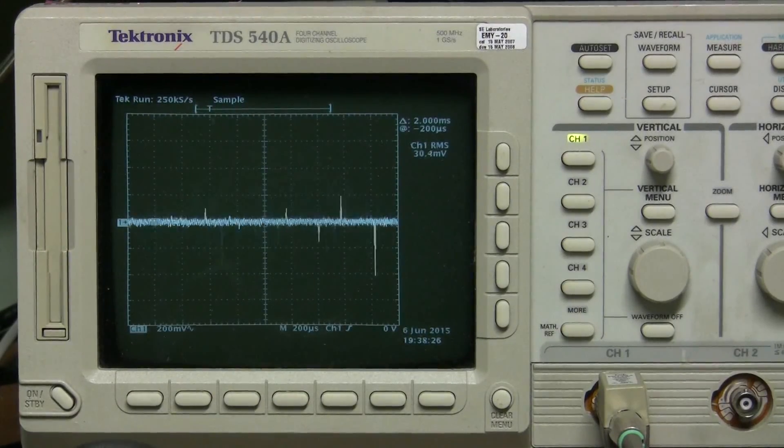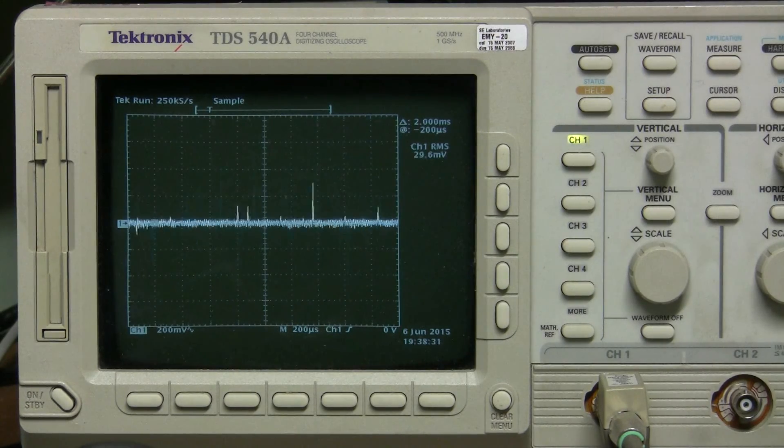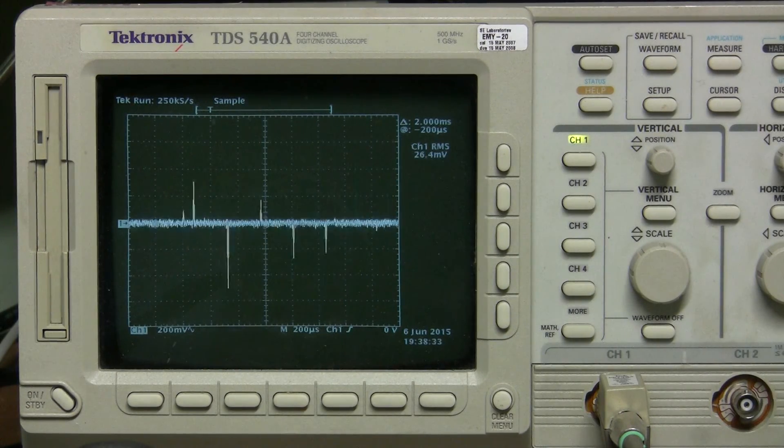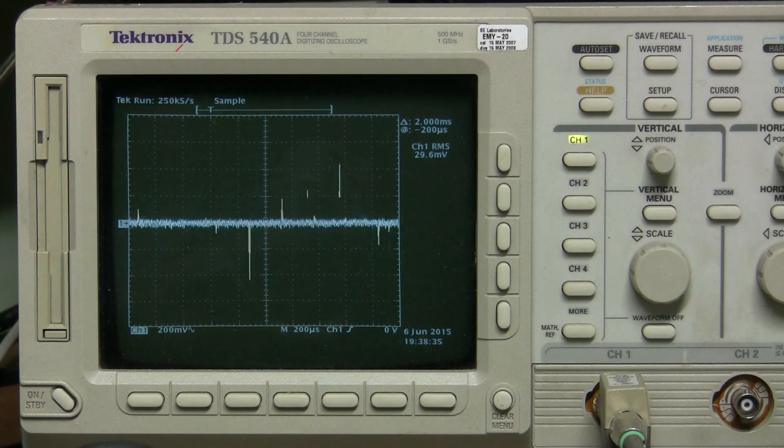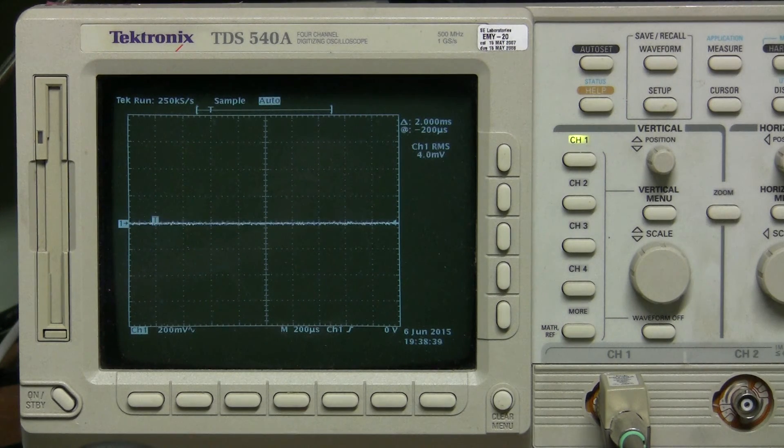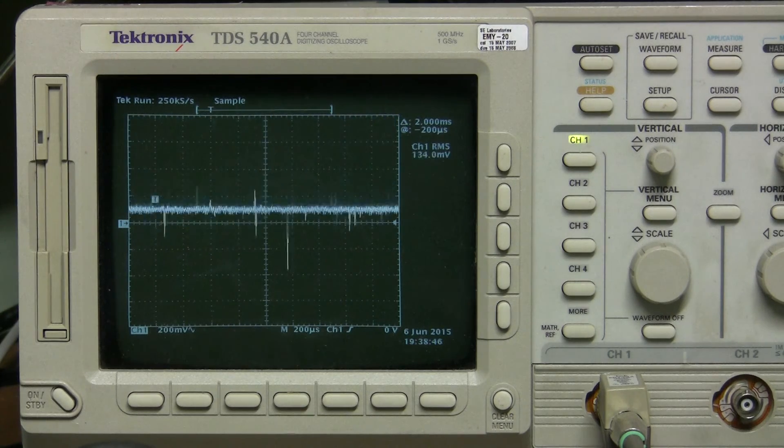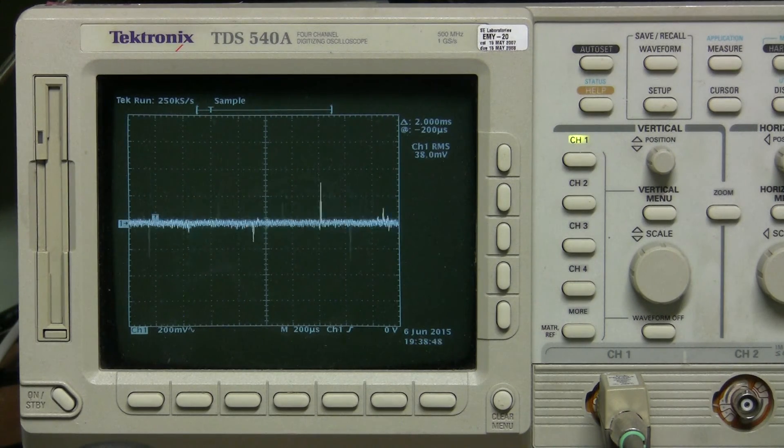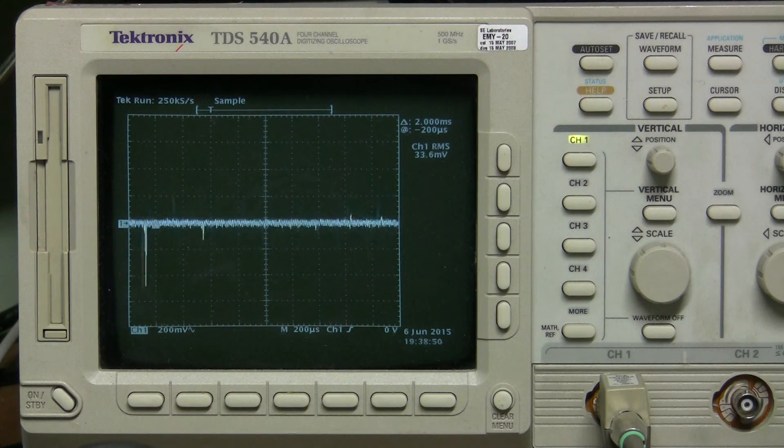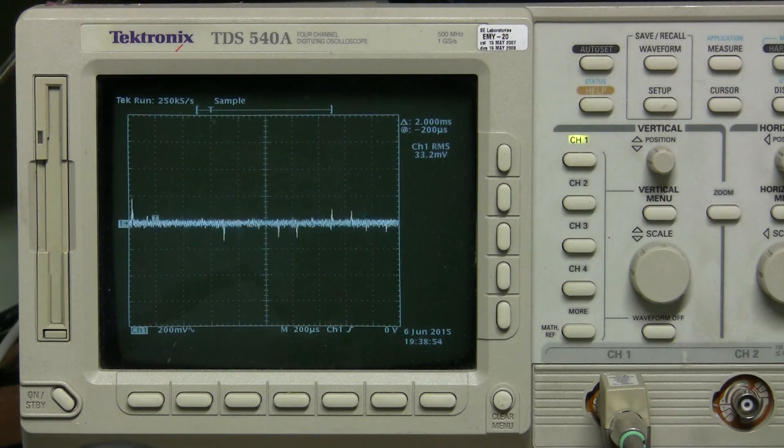And here we are. Look at this horrible switching noise, and it doesn't seem to come from the environment. Here I disconnect the battery, no problems at all. And here I connect the battery again, and we see these terrible spikes. The scale now is 200 millivolts per division.